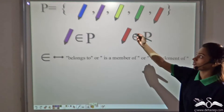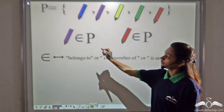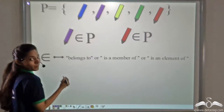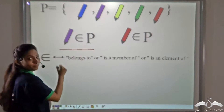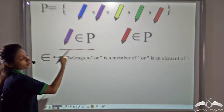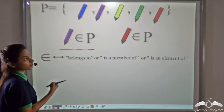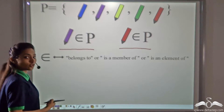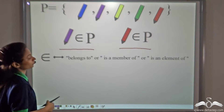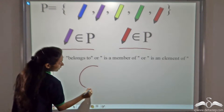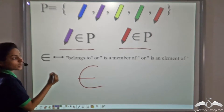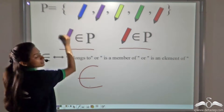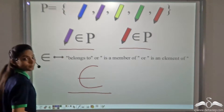Now suppose you have a set of pens P with you. Do you have a purple pen in your set? Yes, we have a purple pen in this set. So we can say that a purple pen belongs to the set P. Check a red pen — do you have a red pen in your set? Yes, a red pen belongs to the set P. This symbol is used to denote 'belongs to', 'is a member of', or 'is an element of'.